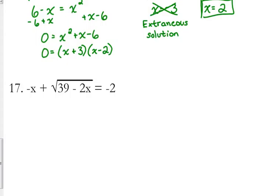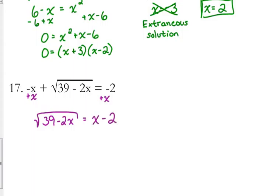Number 17 is the most complex. The radical is not isolated — there's a negative x plus the square root, so we need to move that x to the other side by adding. Now our square root is by itself, equal to positive x minus 2. Once the square root is isolated, we square both sides. The left side square root is gone, leaving 39 minus 2x.